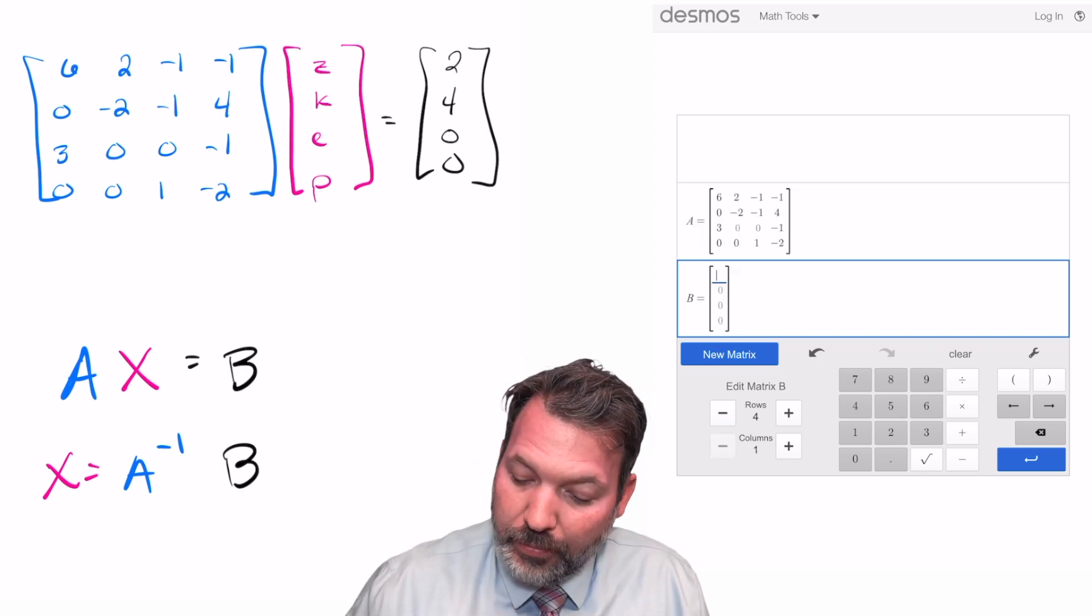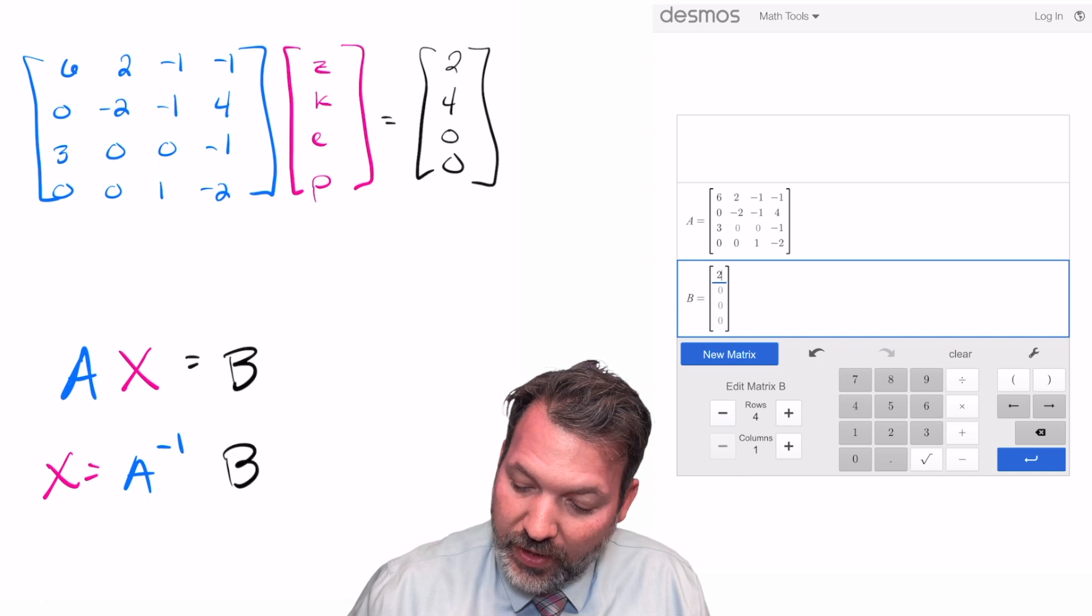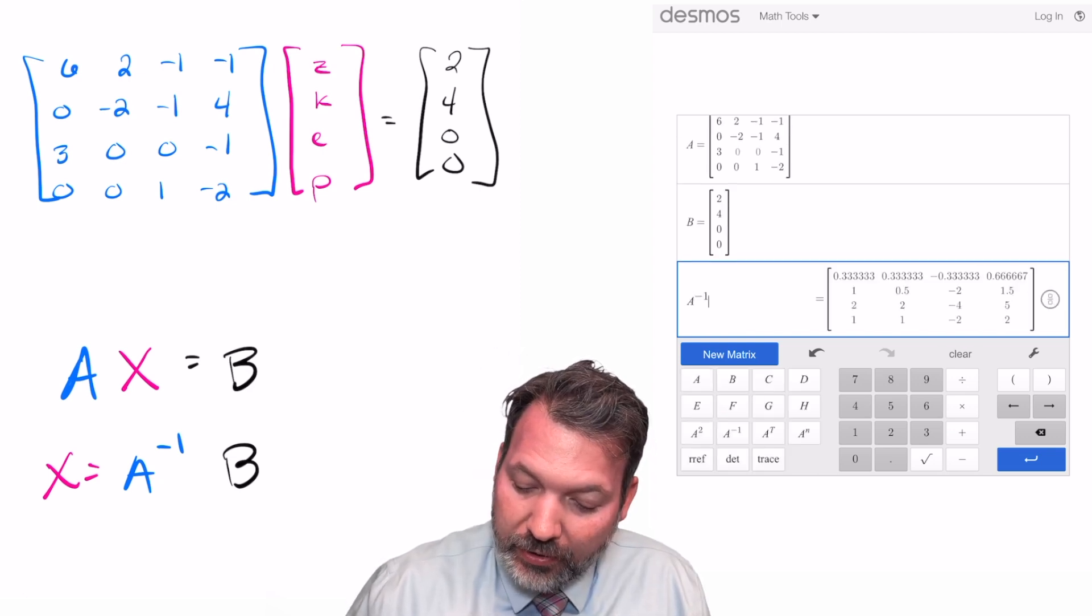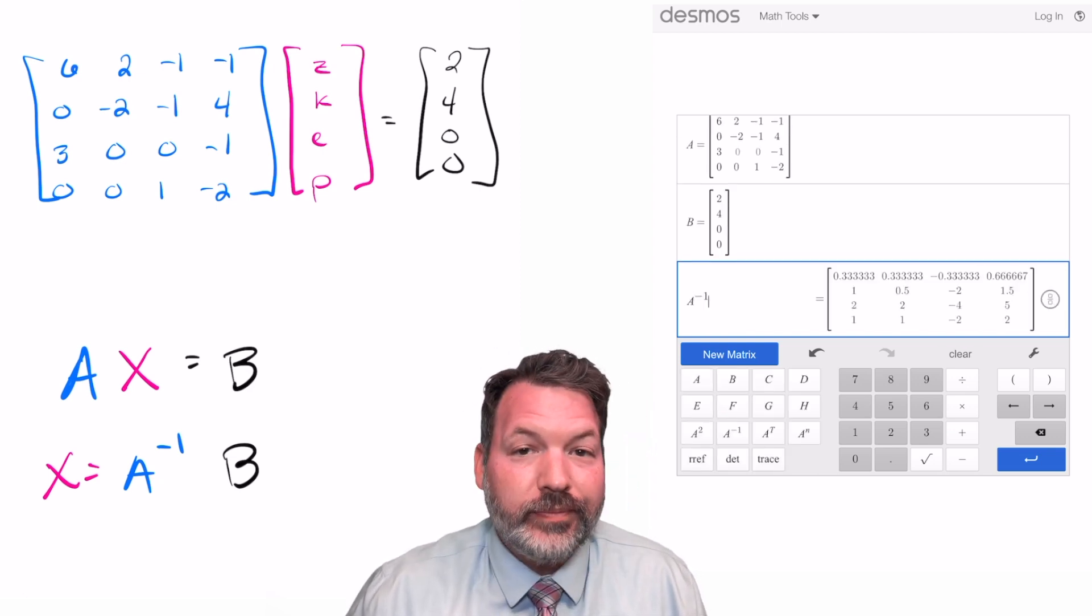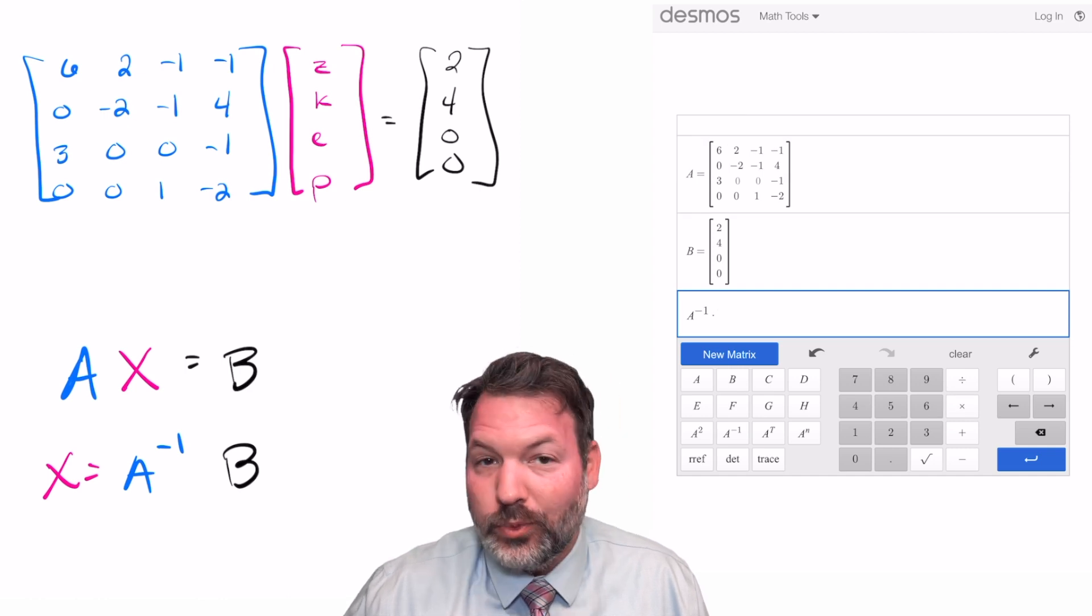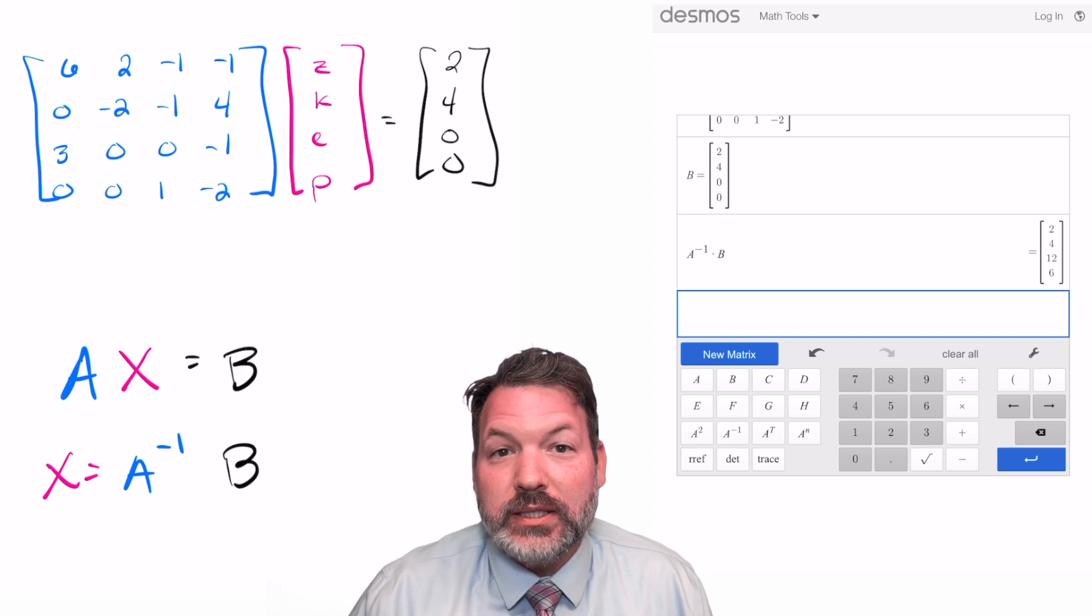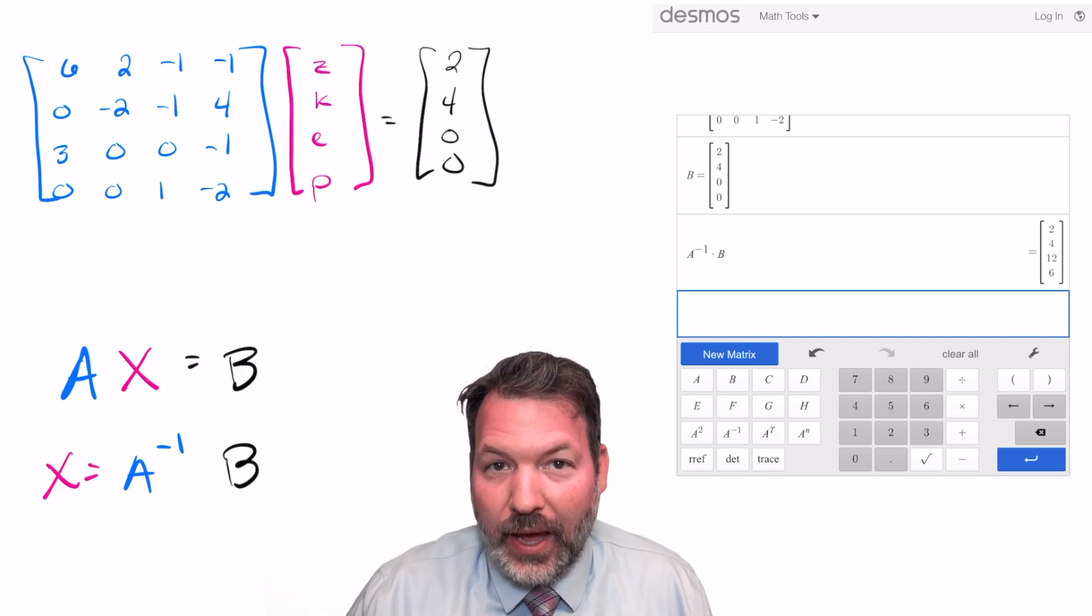Then we'll set up another matrix for our results there at the end, which was simply that single column, 2, 4, 0, and 0. And finally, we're going to let the calculator do all the dirty work here. The inverse of matrix A, whatever that is, we don't need to worry too much about it right now, times matrix B gives us this nice resulting matrix X: 2, 4, 12, 6.